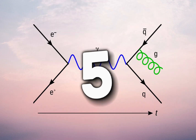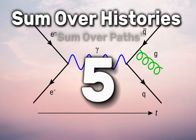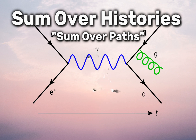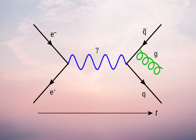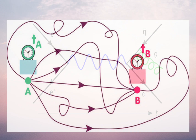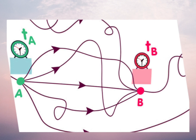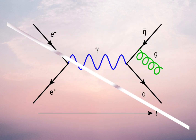5. Sum Over Histories. Feynman's concept of "Sum Over Histories" in quantum mechanics, related to the path integral formulation, provided a new perspective on the probabilistic nature of quantum events and led to a deeper understanding of quantum phenomena.